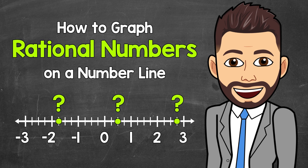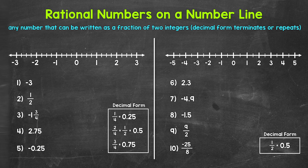Welcome to Math with Mr. J. In this video, I'm going to cover how to graph rational numbers on a number line. Remember, rational numbers are numbers that can be written as a fraction of two integers, and the decimal form either terminates or repeats. If you need more help with what rational numbers are, I have a video covering this — that link is in the description. Let's jump into our examples, starting with numbers one through five.